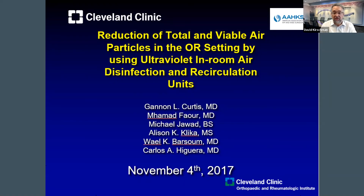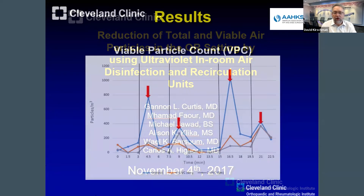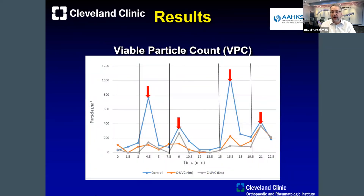Looking at published data from the Cleveland Clinic from 2017, showing reduction of total environmental air particles in the OR setting using ultraviolet in-room air disinfection and recirculation units, you can clearly see a spiking pattern that occurs during the procedure — discrete areas of contamination during bovie usage, gowning or un-gowning, or drilling and using power tools — with spikes of viable particles and airborne bacteria in the room.